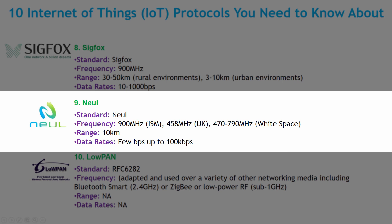Similar to SIGFOX, this next protocol operates in the sub-GHz band. It has specific bands at 900 MHz, 458 MHz, and 470 to 790 MHz white space band. This protocol uses a very small slice of the TV white space spectrum band to deliver high scalability, high coverage, low power, and low-cost wireless networking. These systems are based on ICNE chips which communicate using white space radio to access high-quality spectrum. Its data range is a few bits per second up to 100 kbps.